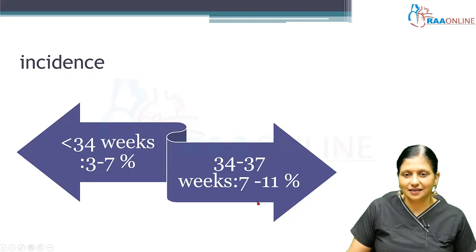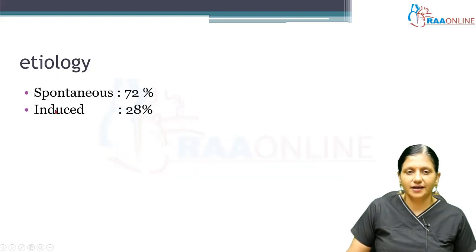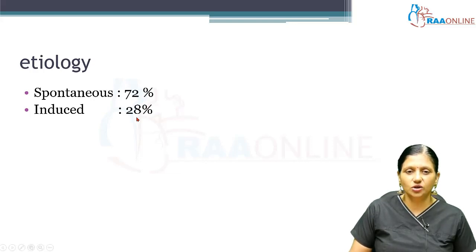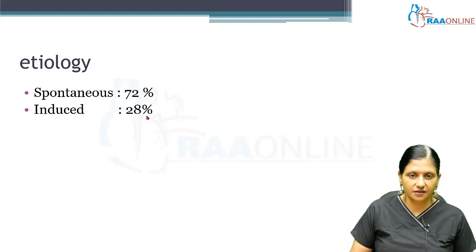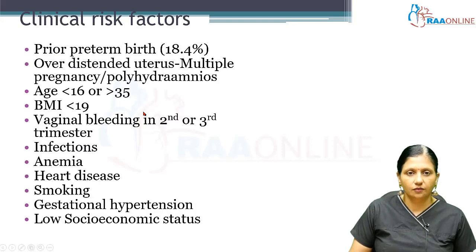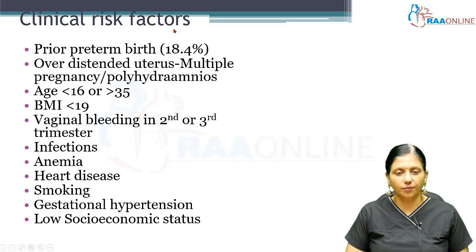Regarding etiology, spontaneous preterm labor is seen in 72% of cases. Induced preterm accounts for 28% — sometimes labor is induced prematurely when continuation of pregnancy is not compatible with maternal interest, such as in gestational diabetes, hypertensive disorders in pregnancy, or renal disease in pregnancy.